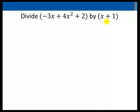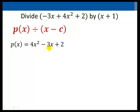In synthetic division a polynomial P of x is divided by x minus c. Here P of x must be written in descending order as 4x squared minus 3x plus 2. We look for c in x plus 1. If x plus 1 is equal to x minus c then c will be equal to negative 1.